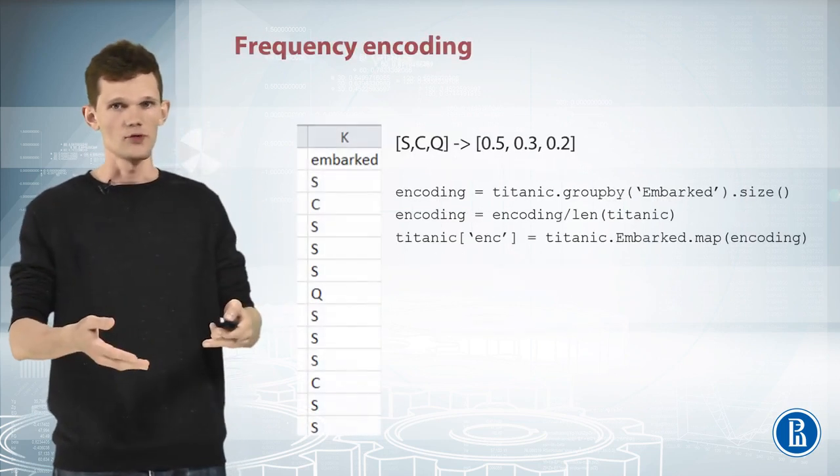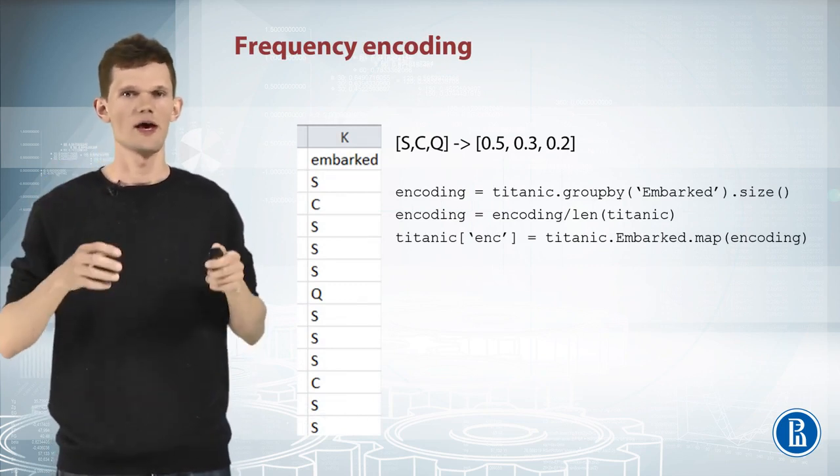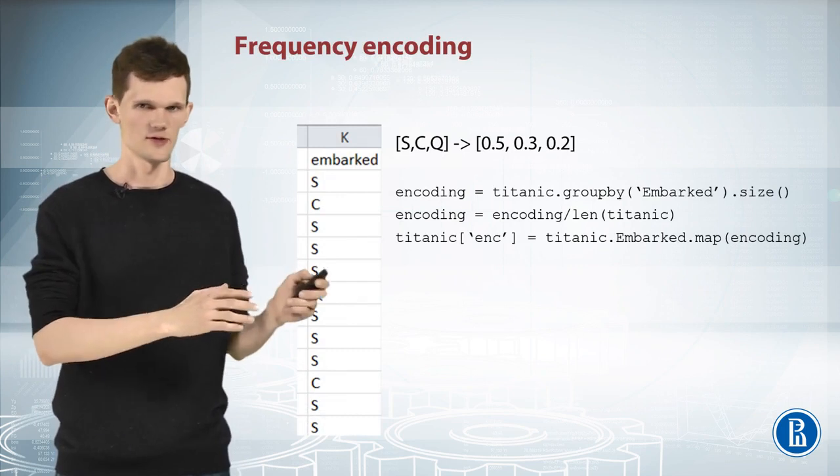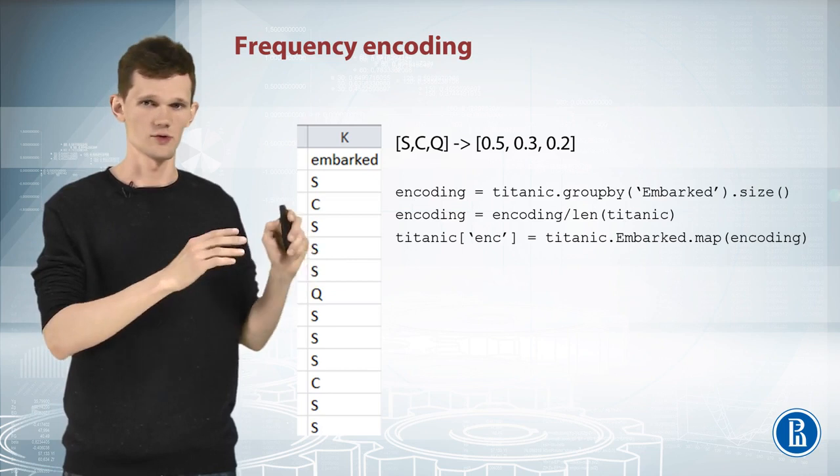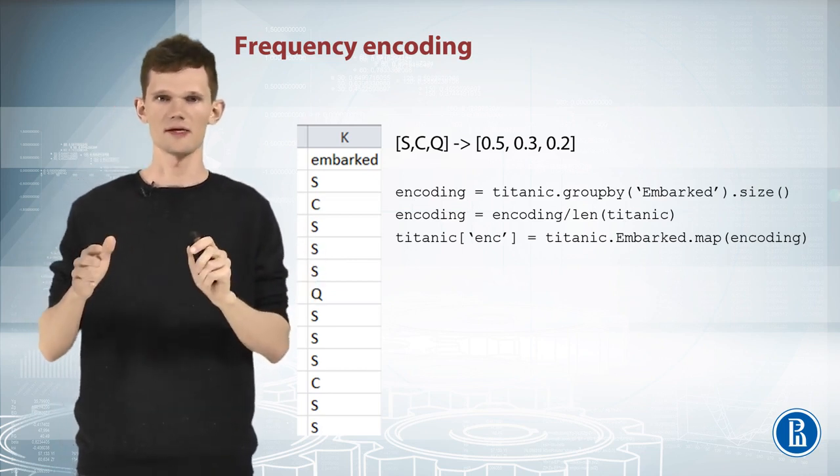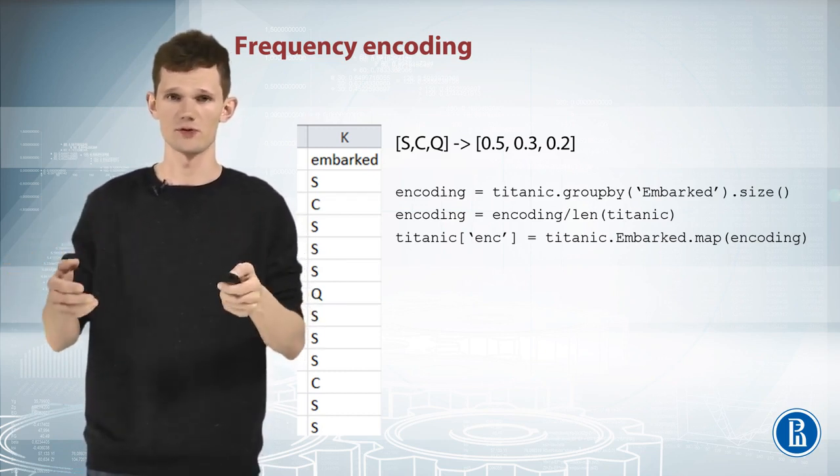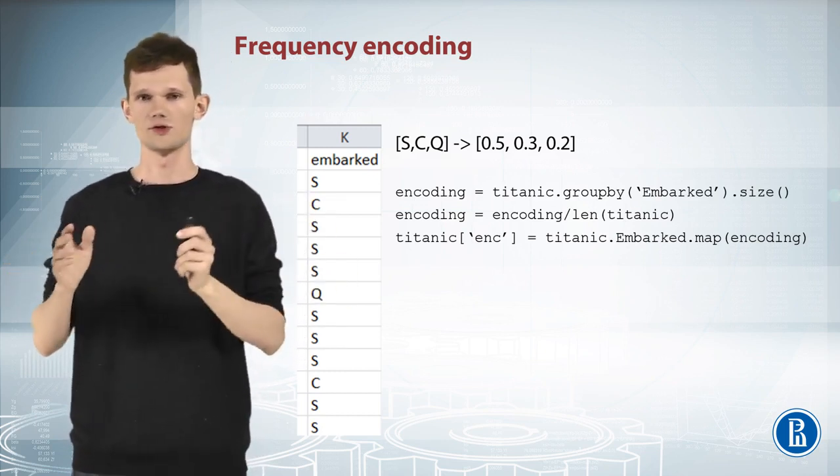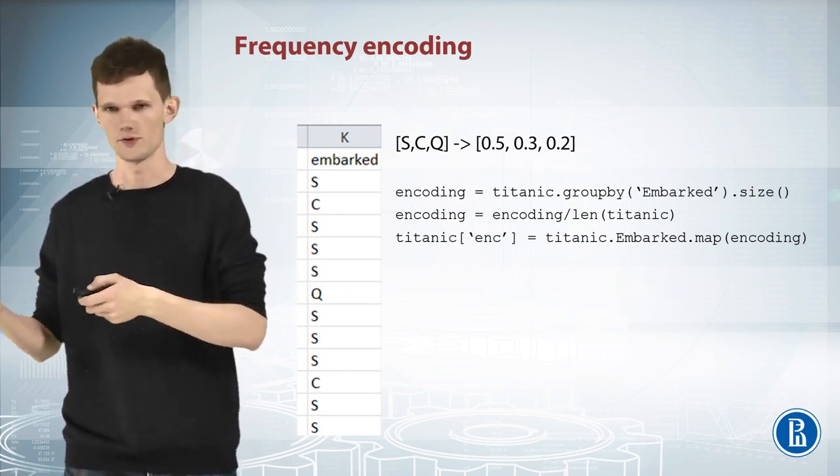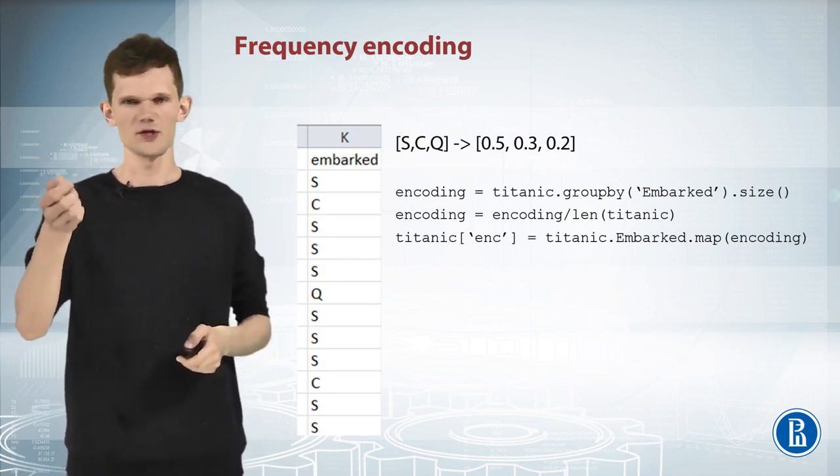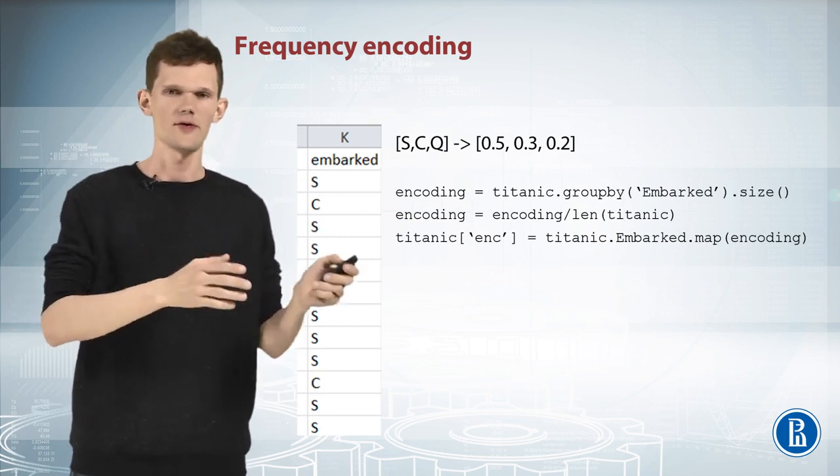The third method I will tell you about is called frequency encoding. We can encode this feature via mapping values to their frequencies. If in 30% of rows Embarked is equal to C, in 50 to S, and the rest 20 is equal to Q, we can change these values accordingly. C to 0.3, S to 0.5, and Q to 0.2. This will preserve some information about values distribution and can help both linear and tree models.